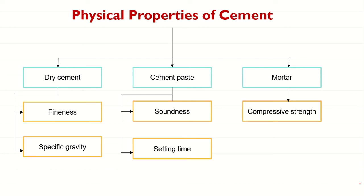Some physical properties are determined using dry cement alone, some using cement paste, and some using mortar. Along with one form of cement we cannot determine all the physical properties — we have to change its form to know various types of properties. As you can observe in the flowchart, physical properties are basically determined on three forms of cement.